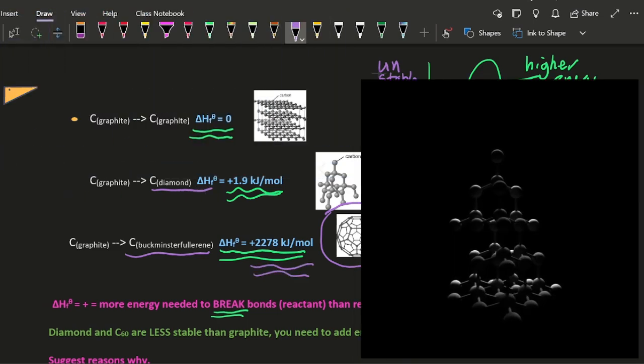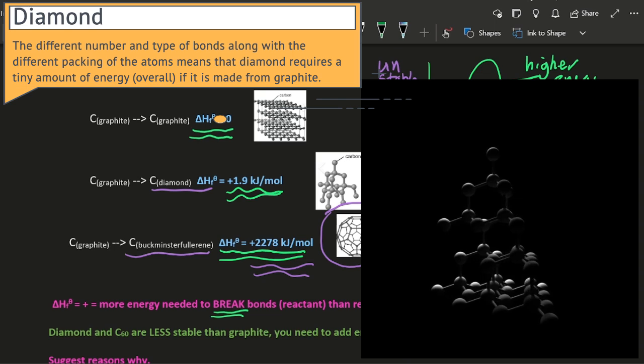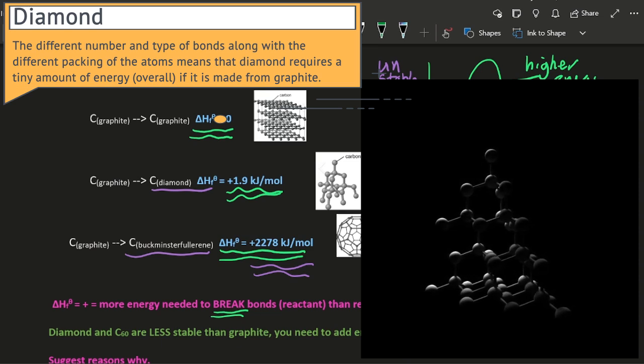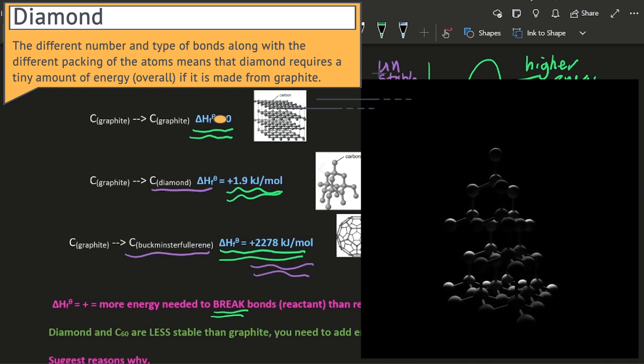Onto diamond. That's a little more subtle. The different number and type of bonds, along with the different packing of the atoms, mean that diamond requires just a tiny amount of energy overall if you're going to make it from graphite. And apparently if you leave diamond long enough and heat it hot enough, it will rearrange itself into graphite again, which is the lower energy one.